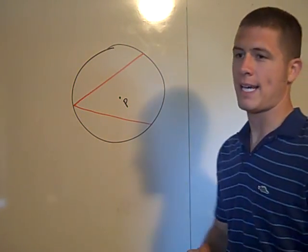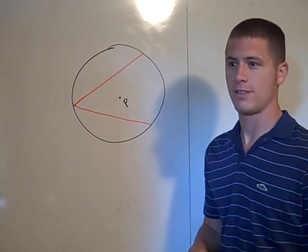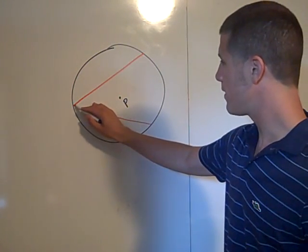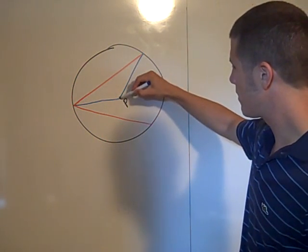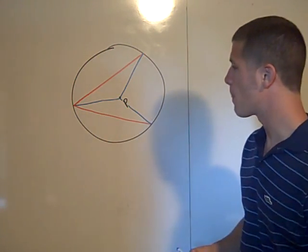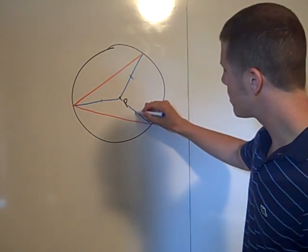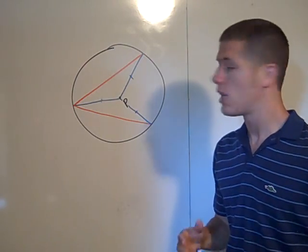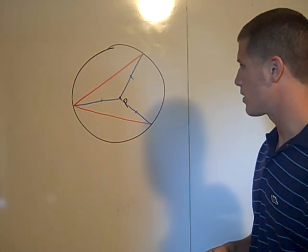In geometry proofs, it's all about drawing the correct auxiliary lines. The lines you want to draw here connect the center P to the endpoints of the inscribed angle. You'll notice that these three segments are all congruent because they are all radii of the circle, and all radii are of equal length.